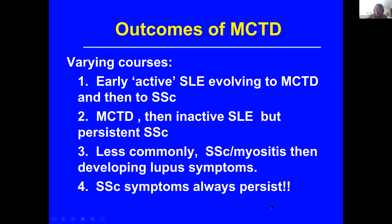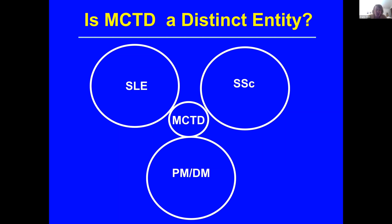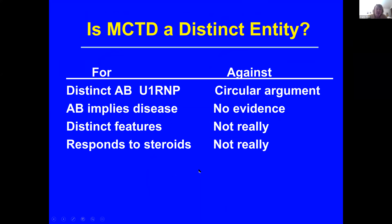Scleroderma symptoms always seem to persist. There's been argument throughout the 50 years that we've been dealing with this entity about whether it's a totally separate disease from scleroderma, lupus, or myositis. The antibody is not only present in patients with mixed connective tissue disease — some people have U1RNP and have pure lupus or pure scleroderma without any overlapping features. We know that these antibodies aren't the cause of the disease; they're markers of disease. And not everything responds to steroids, as initially thought — all the scleroderma features certainly don't respond to steroids.